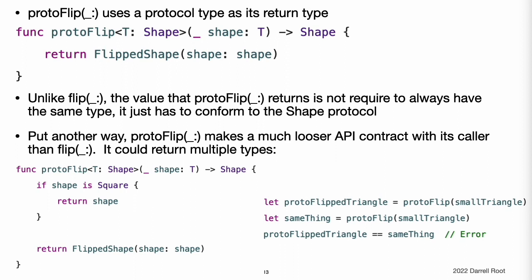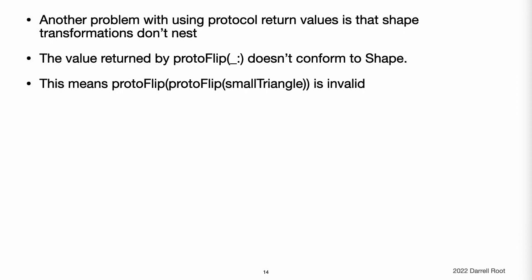Using a protocol type as the return type for a function gives you the flexibility to return any type that conforms to the protocol. However, the cost of that flexibility is that some operations are not possible on the return values — this example shows how the equal-equal operator is not available, as it depends on specific type information that is not preserved by using a protocol type. Another problem with this approach is that the shape transformations do not nest. The result of flipping a triangle is a value of type shape, and the protoFlip function takes an argument of some type that conforms to the shape protocol. However, a value of a protocol type does not conform to that protocol, so code like protoFlip(protoFlip(smallTriangle)) that applies multiple transformations is invalid because the flipped shape is not a valid argument to protoFlip.